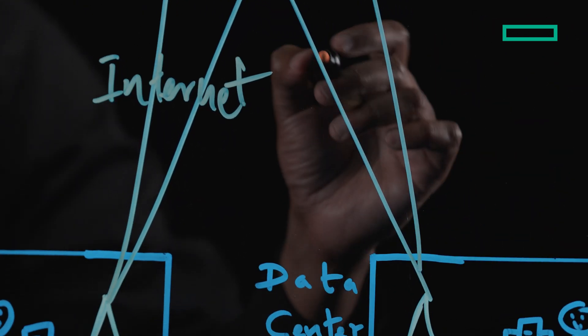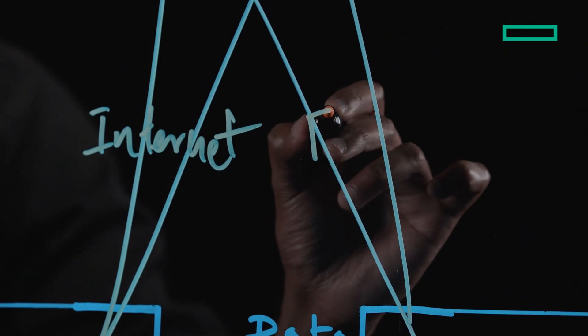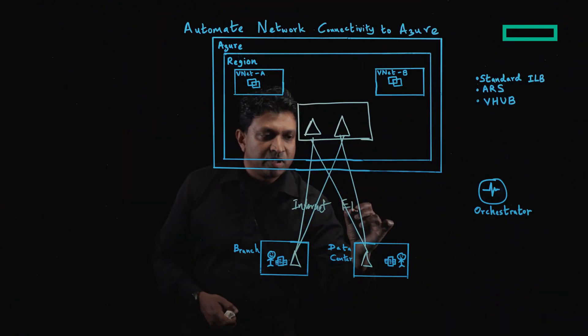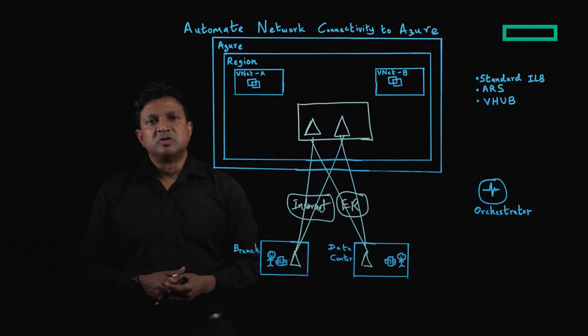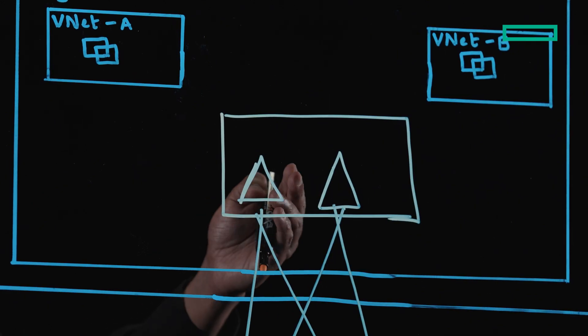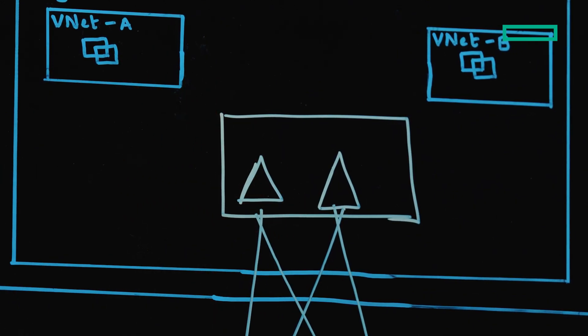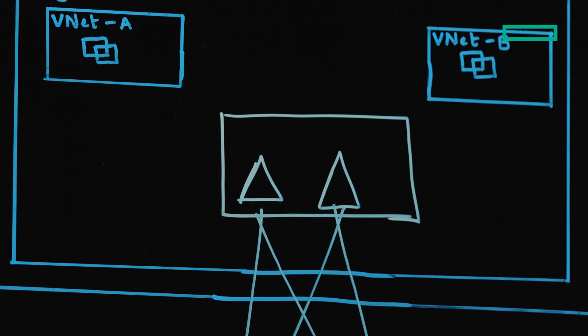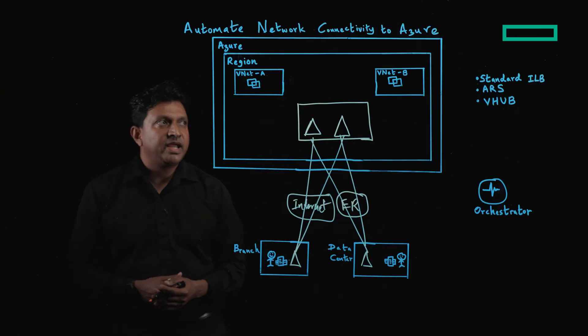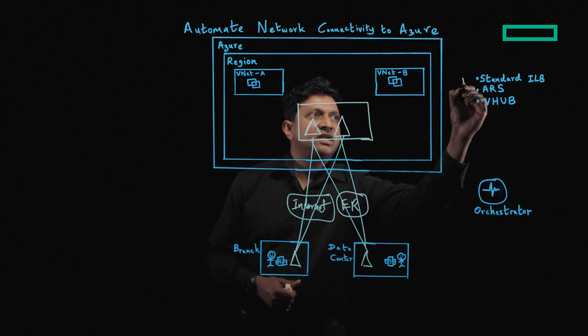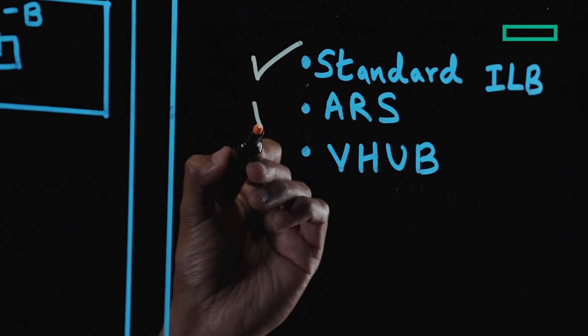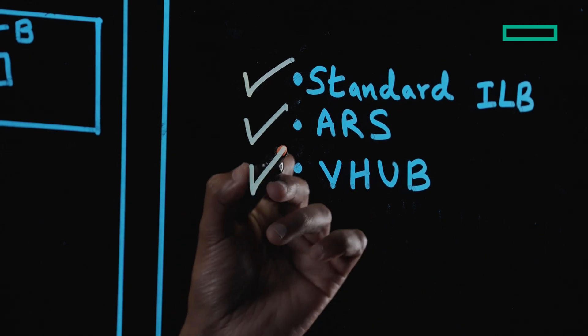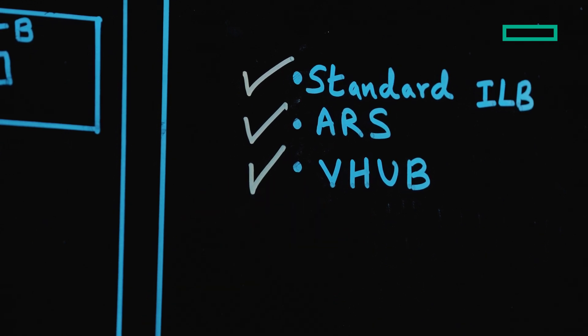And if you have an ExpressRoute link, you can also establish SD-WAN tunnels over the ExpressRoute circuit as well. To simplify connectivity and to automate connectivity between the EdgeConnect appliances and the workloads in the cloud, we have introduced a capability to automatically create either an Azure standard load balancer, or an Azure route server, or a virtual WAN hub directly from the orchestrator.